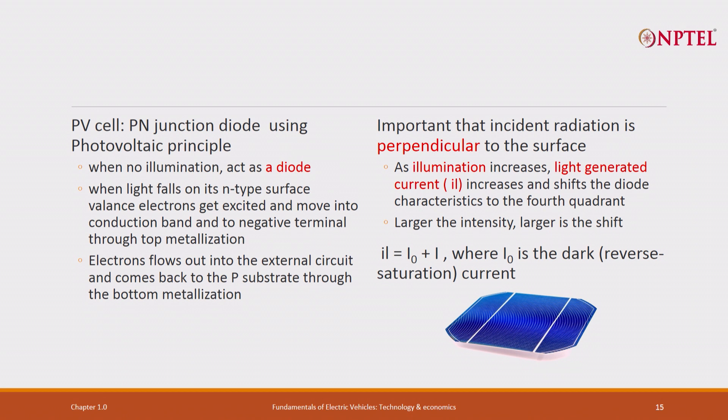When there is no illumination, it acts like a diode, just like a diode. When light falls on the n-type surface, valence electrons get excited and move into the conduction band to the negative terminal through the top metallization.